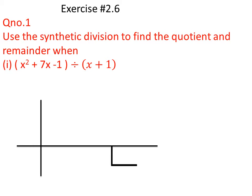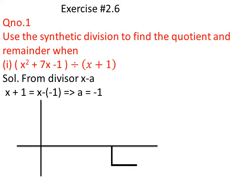The divisor is always taken in the form of x - a. To convert x + 1 into the form x - a, we write x - (-1), so the value of a equals -1. First, we write the coefficients of the dividend in the first row: the coefficients are 1, 7, and -1. On the left side we write the value of a, which is -1.